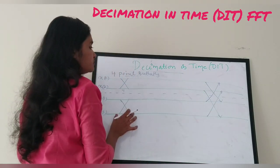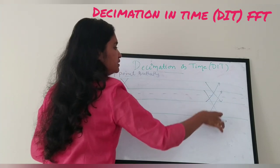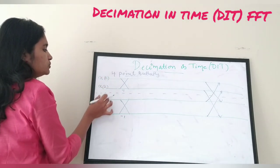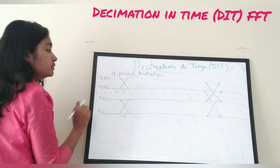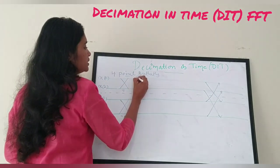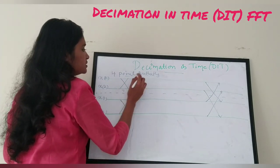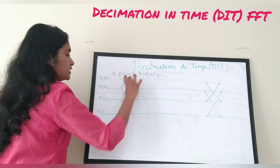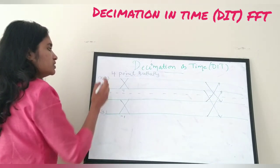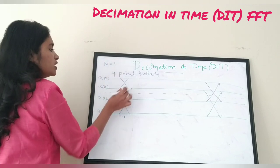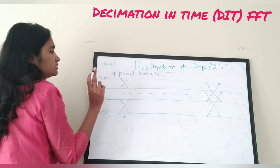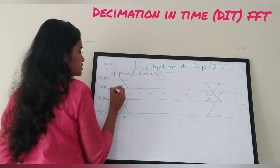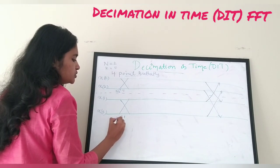The two butterflies are combined in stage two to get the result of a four-point butterfly. The inputs applied are x of 0, x of 2, x of 1, and x of 3, and the outputs are on the other side. For the twiddle factors in stage one: each butterfly is a two-point butterfly, so capital N equals 2 and there is only one butterfly, so k equals 0, giving W_2 raised to 0 for both.